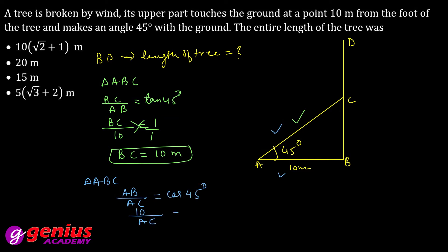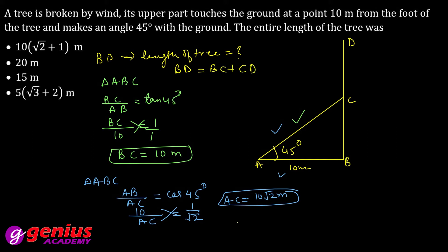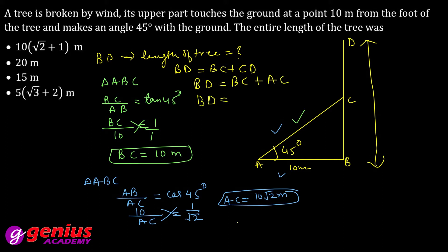Ab hamare paas BC = 10 m aur AC = 10√2 m hai. Jo part tuta hai woh CD hai, aur ground pe touch hua hai, toh CD ki value AC ke equal hogi. Total length BD = BC + CD = BC + AC = 10 + 10√2 = 10(√2 + 1) metres. Yeh aapka entire length of the tree hai.